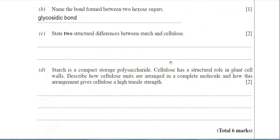Moving on to part C. The command word in this question is 'state' — check out the video on command words for the exact meaning. Part C asks you to state two structural differences between starch and cellulose. There are many structural differences, but there's a little trick to answering this type of question. Let me give you an example: starch is made up of alpha-glucose and cellulose is made up of beta-glucose.